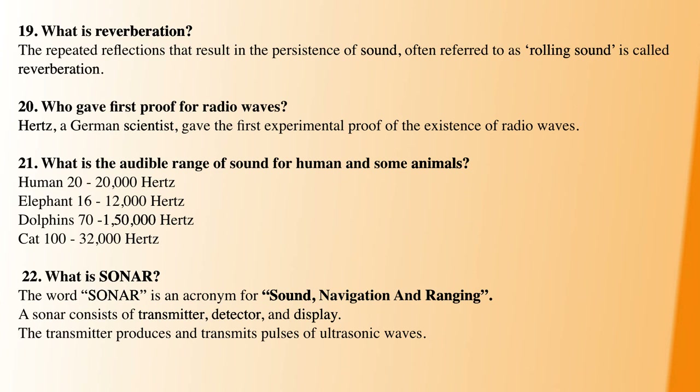What is the audible range of sound for humans and animals? The human audible range is important to know. Elephant: 60 to 12,000 Hz. Dolphins: 70 to 150,000 Hz. Cat: 100 to 32,000 Hz.